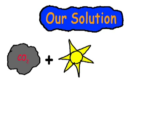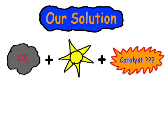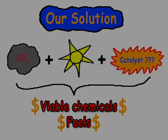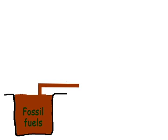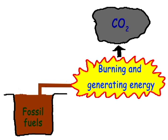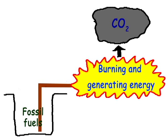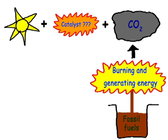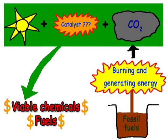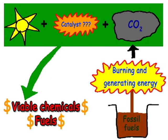Converting carbon dioxide into viable chemicals and fuels using solar energy is our solution to reduce excess carbon dioxide. In the near future, we will run out of fossil fuels, and our solution will also help save fossil fuel reserves.